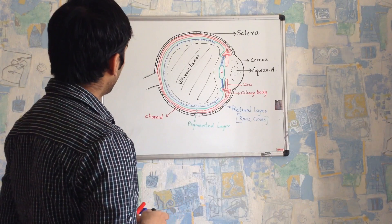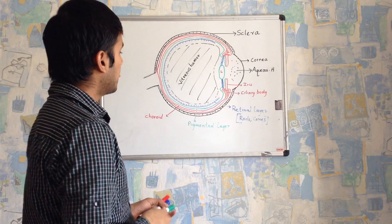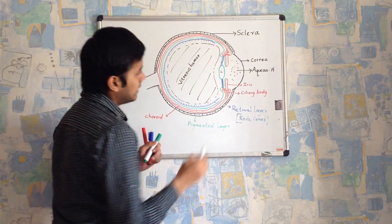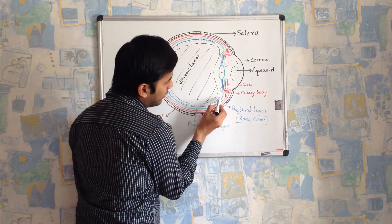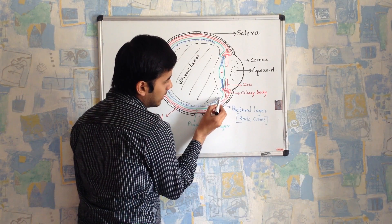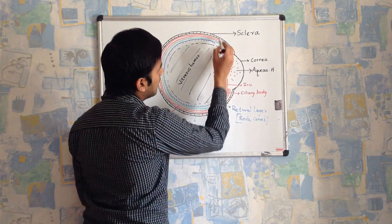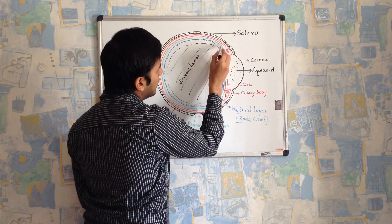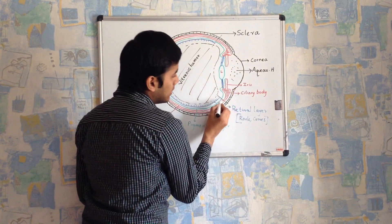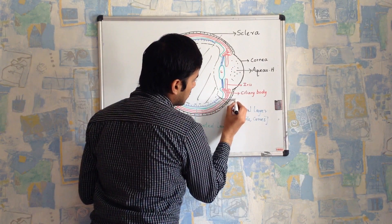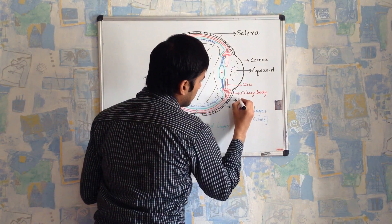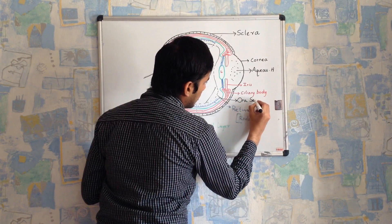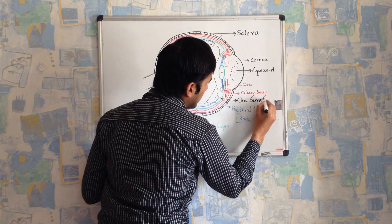This is the basic structure of the eyeball. One more important point: the point where the retina stops — both superiorly and inferiorly — but where the pigmented layer continues forward, this point is called the ora serrata.